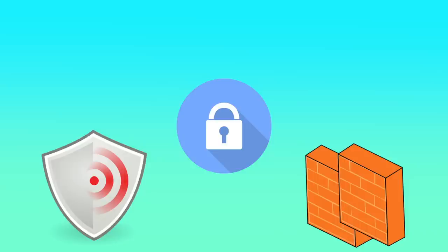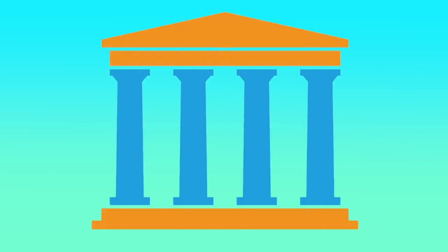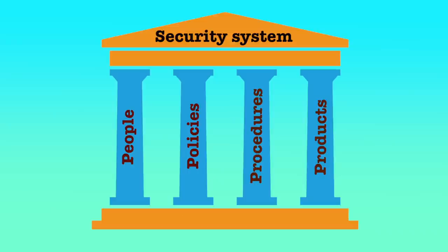For providing security, a number of security products need to be installed in the enterprise. These include antivirus software, firewalls, surveillance systems, intrusion detection systems, etc. However, just installing these products alone will not provide the necessary security. People, policies, procedures and products are the four pillars of any security system.